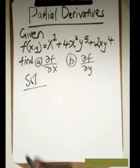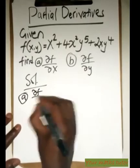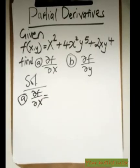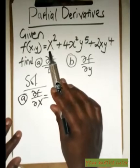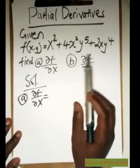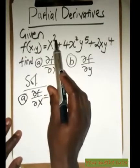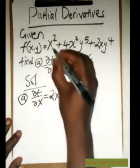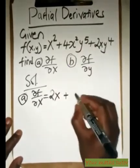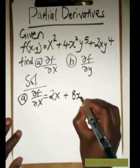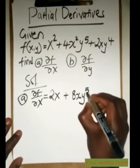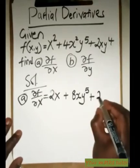Now we differentiate the function with respect to x. When you are differentiating with respect to x, the y variables behave like constants, so we just go where there is x — that's where you differentiate. The power multiplies by the coefficient, so we get 2x, then you reduce the power by 1. Plus the power multiplied by the coefficient, reduce the power by 1. If there is y or any other variable, you just attach them there, and plus here we get 2y.